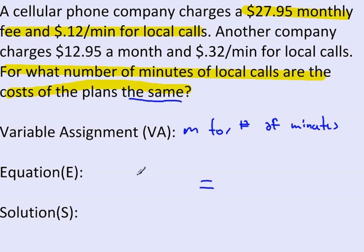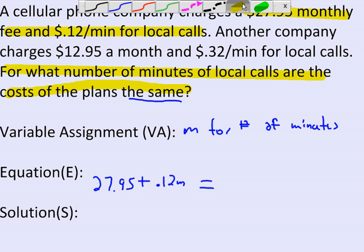$27.95 is kind of a flat fee, so we're going to put that in as $27.95. And in addition to that, we have to add on 12 cents per minute. Our minutes here is our variable M, so we're going to put .12M. The right-hand side equation is built very similar to the left side. It's $12.95 a month for 32 cents a minute. So our flat rate is $12.95, and it's going to be plus .32M.